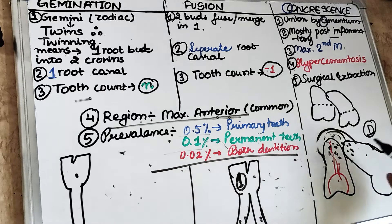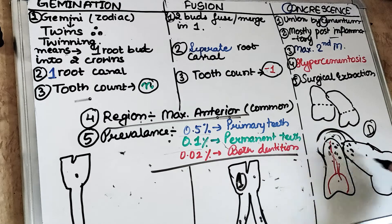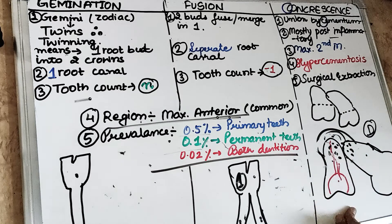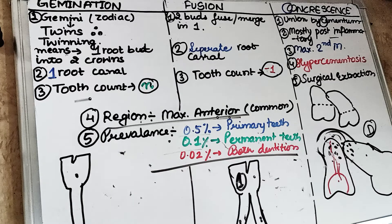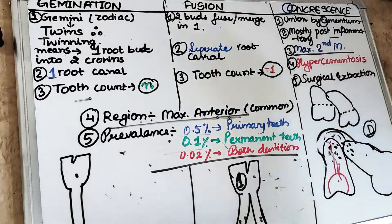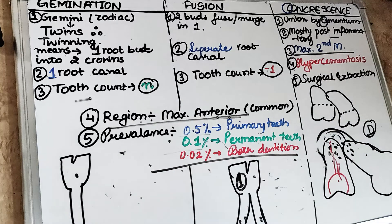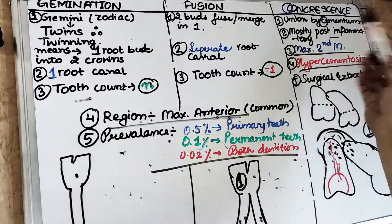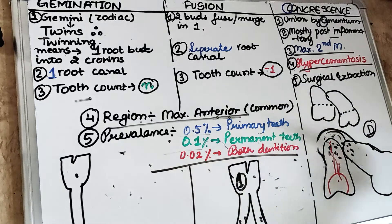This concrescence occurs when the third molar is either horizontally impacted or in a distoangular position — where the roots are close to each other. Mesioangular impaction brings the crown close to the second molar, as we studied in impaction. So the maxillary second molar region is most commonly involved, with hypercementosis occurring because of the cemental repair process.